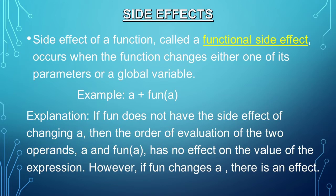Now let's talk about operand evaluation side effects. A side effect of a function is called a functional side effect. This occurs when the function changes either one of its parameters or a global variable. For example, a plus fun(a): if fun does not have the side effect of changing a, then the order of evaluation of the two operands, a and fun(a), has no effect on the value of the expression. However, if fun changes a, there will be an effect.